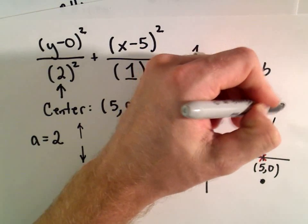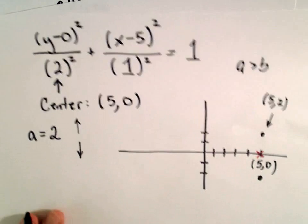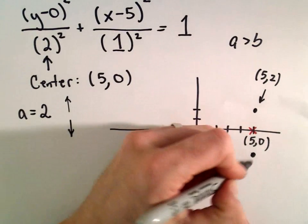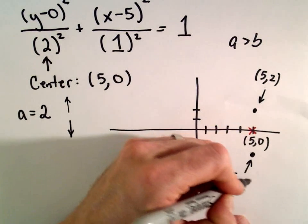So we've got 5, 2. And then our other point is going to be here at 5, negative 2.